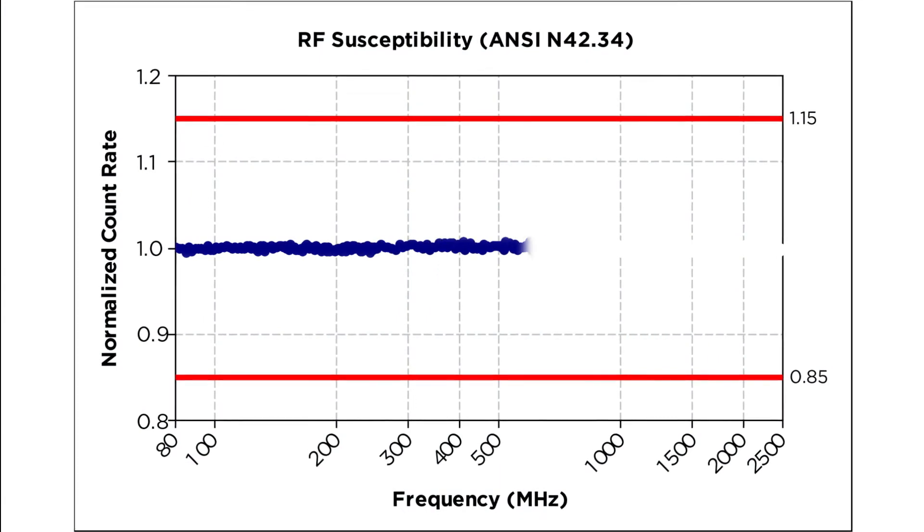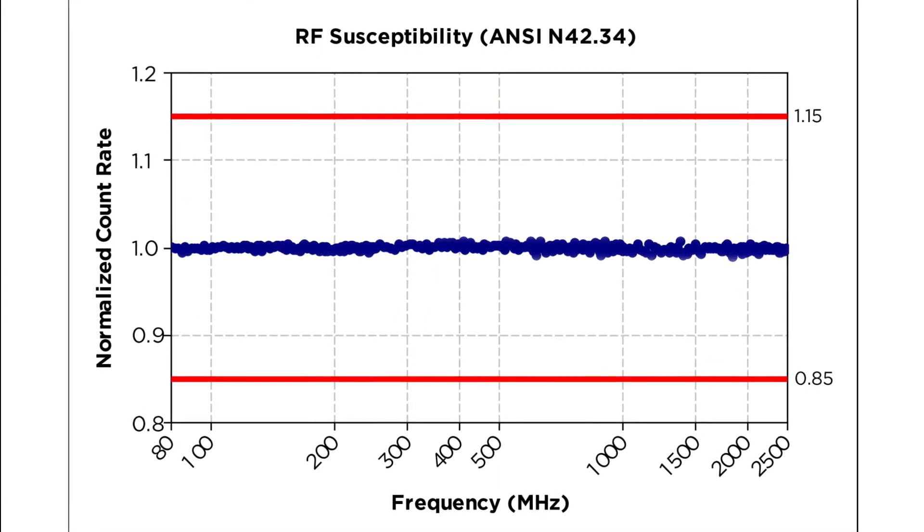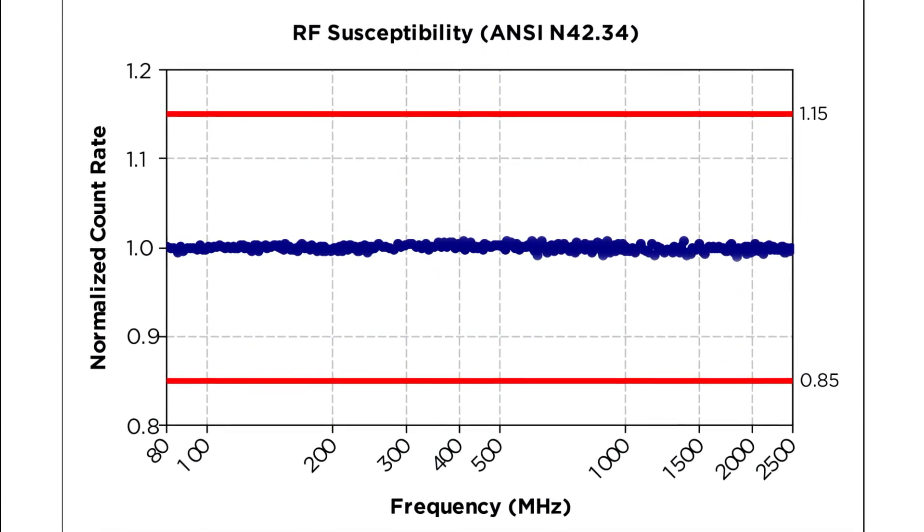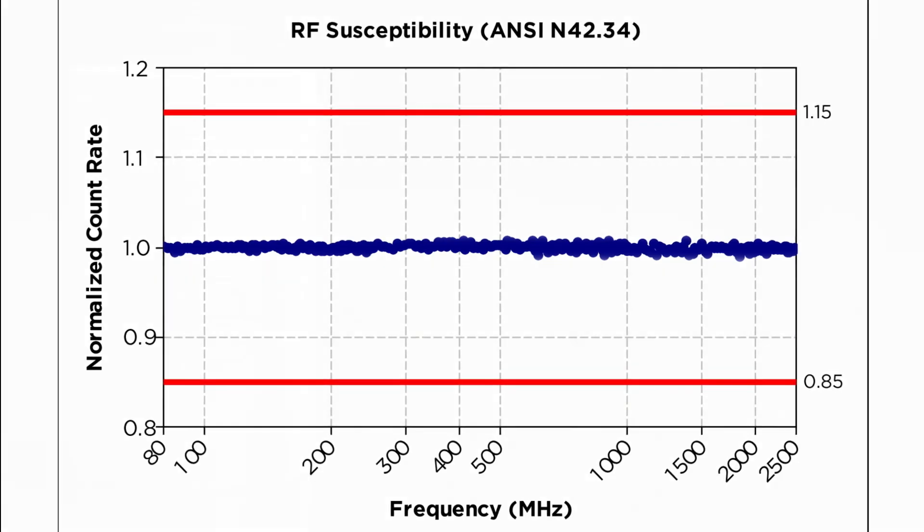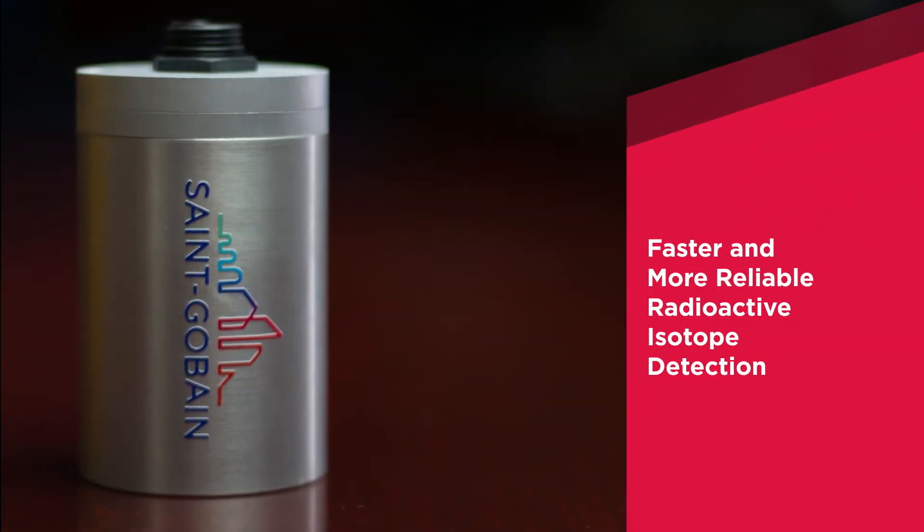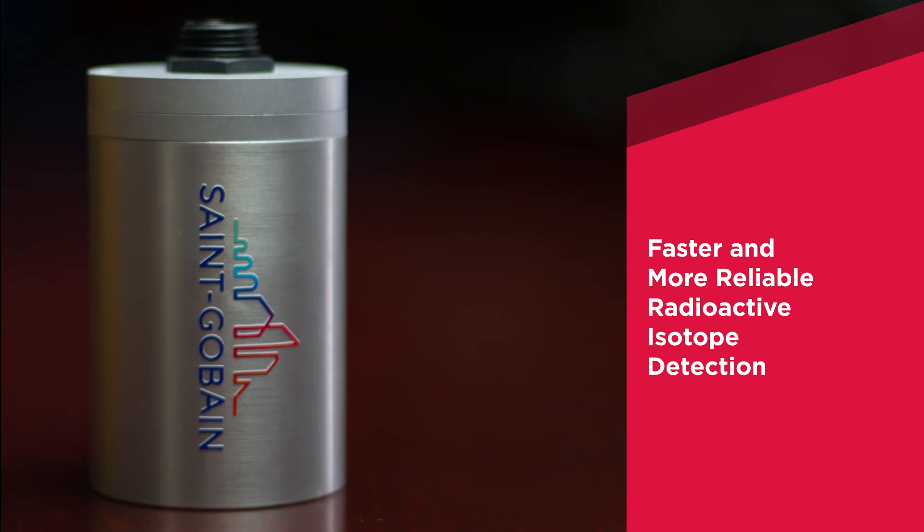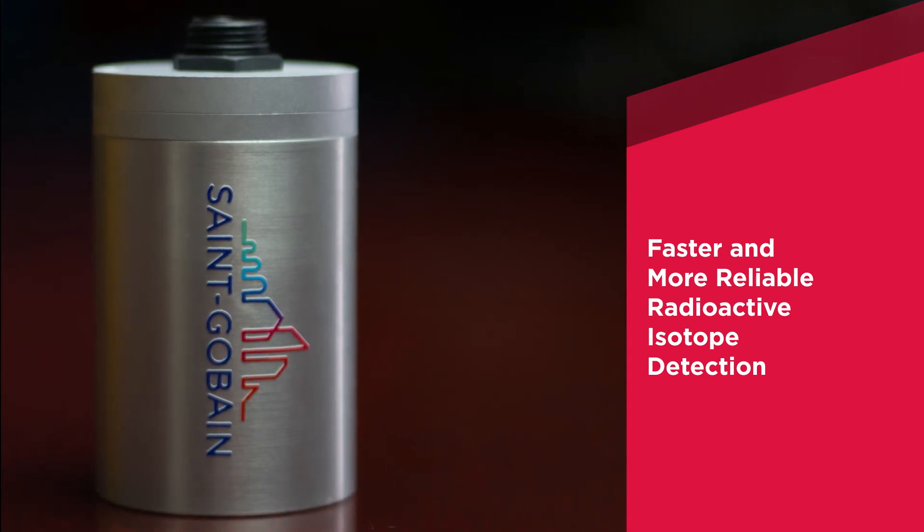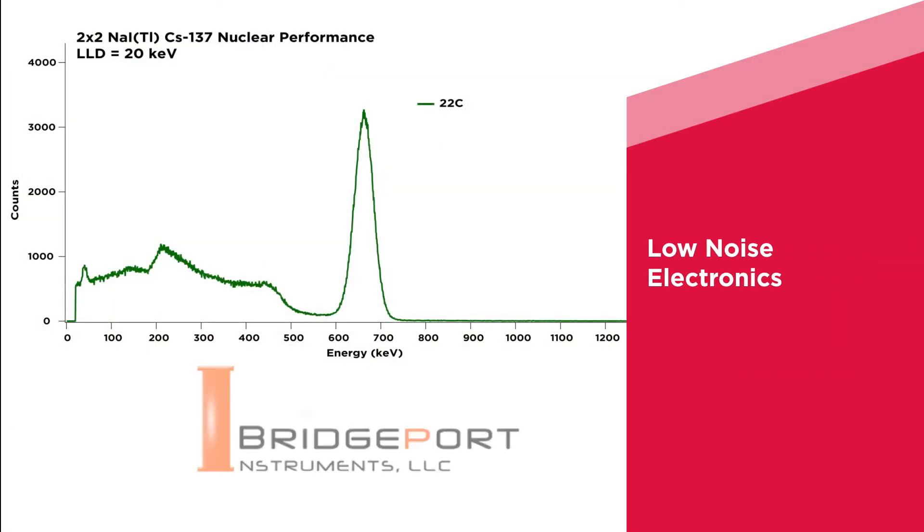We also understand that accurate detection is crucial, so our analog circuit dramatically reduces the impact of interference, giving you radioactive isotope identification that's faster and more reliable. To achieve this, we partnered with Bridgeport Instruments to develop low-noise electronics, such as the state-of-the-art multi-channel analyzer.